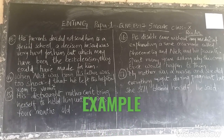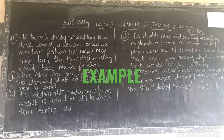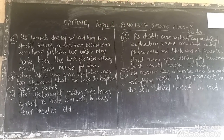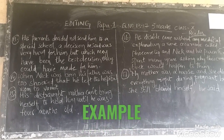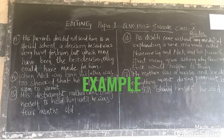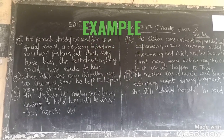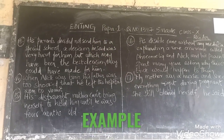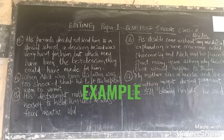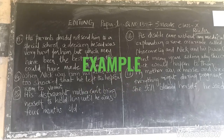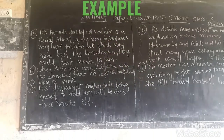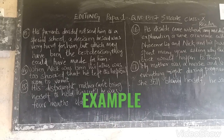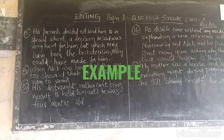Now, here we have five different sentences given. You can observe each and every sentence — there is an error in each and every sentence. Sentence 13: 'His parents decided not sent him to a special school' — a decision he said was very hard for him, but which may have been the best decision they could have made for him. Can you point out the error?